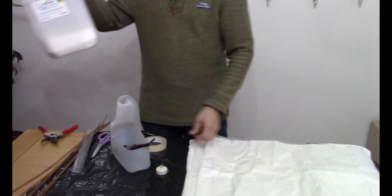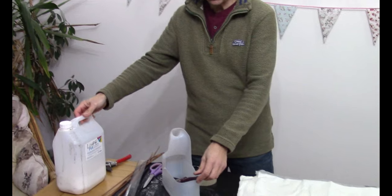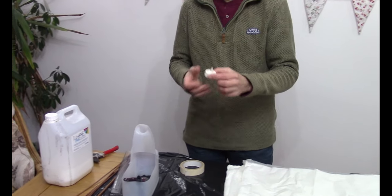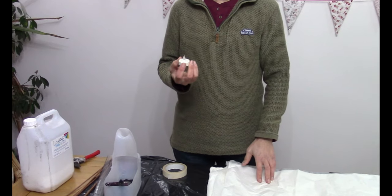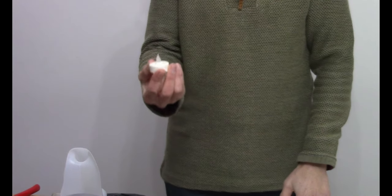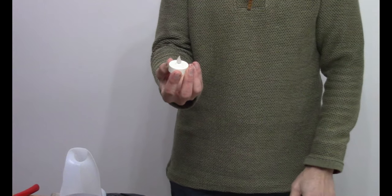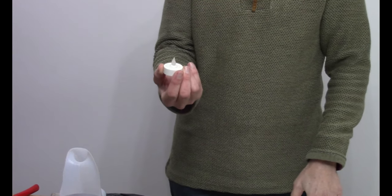And some PVA glue, which we'll mix with some water, and some paint brushes. The last thing is also something to put actually in the lantern to show the light. These little battery operated tea lights are ideal, or you can always hang a camping lantern in there as well.